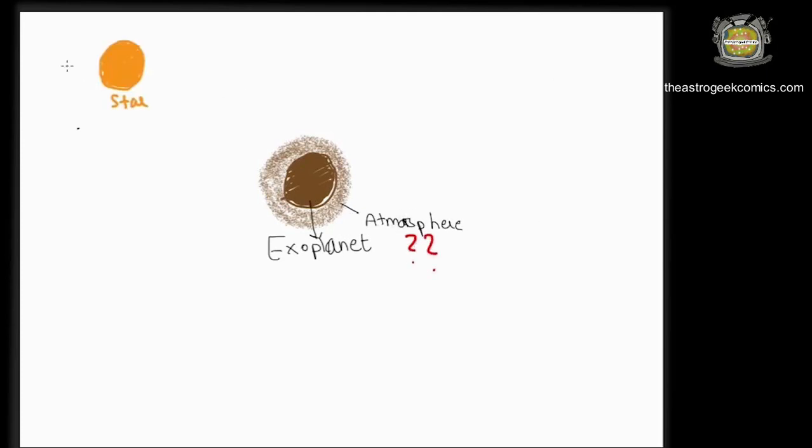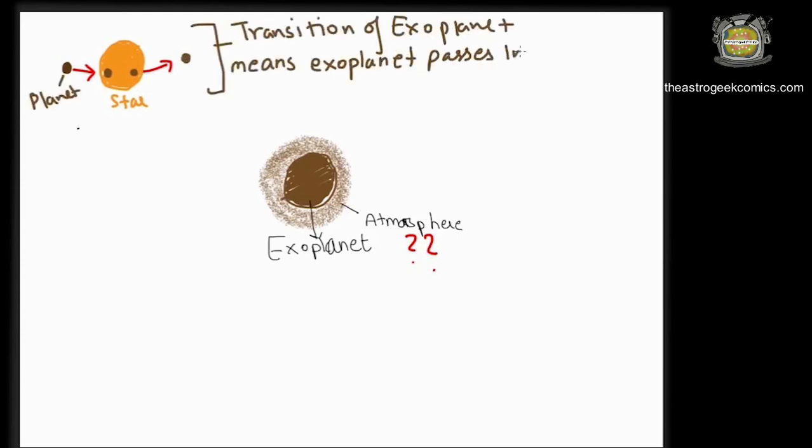This technique is also used to study the chemical composition of the atmospheres of exoplanets, which are the planets that go around the stars other than the sun. When an exoplanet passes in front of its host star as observed from Earth, this event is called transitioning and is also used to detect them.